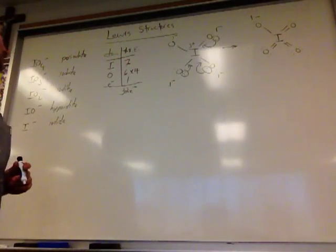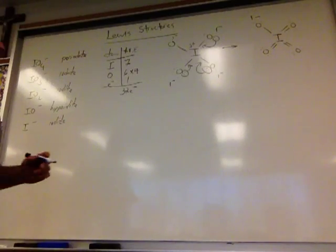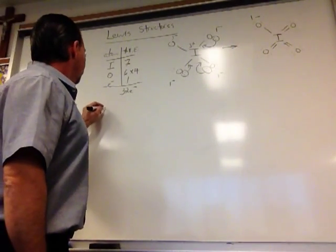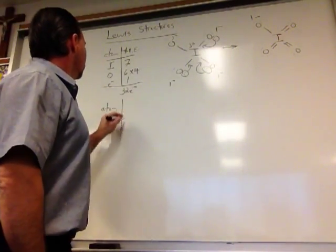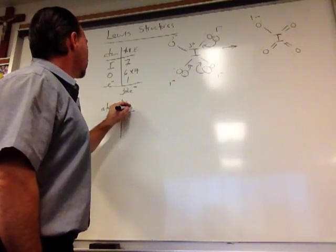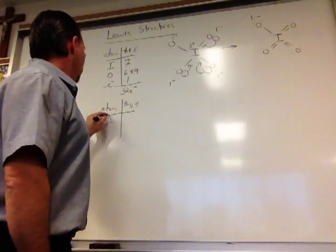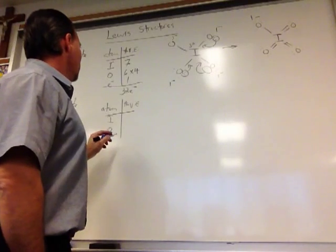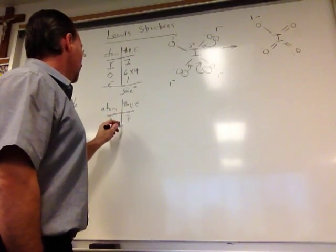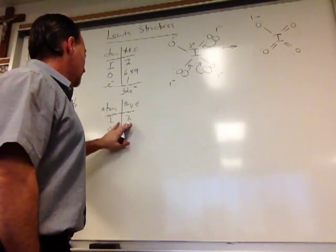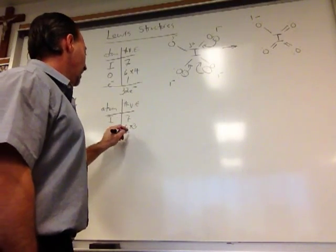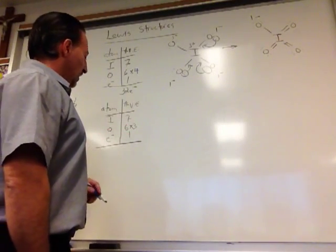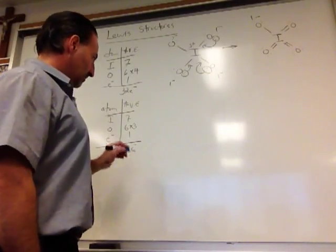In the case of iodate, we have iodine, oxygen, the extra electron, 7 for the iodine, 6 times 3 for the oxygen, and 1 electron for the charge. 18 plus 8 gives you 26 electrons for iodate.